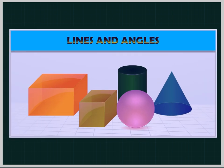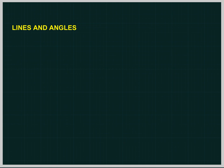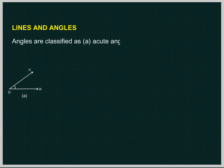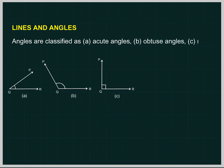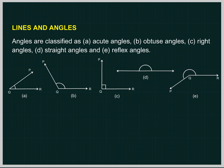Lines and Angles. Angles are classified as acute angles, obtuse angles, right angles, straight angles, and reflex angles.